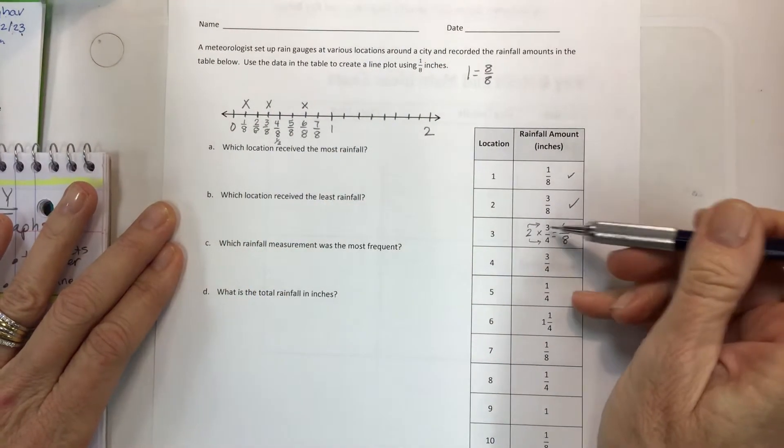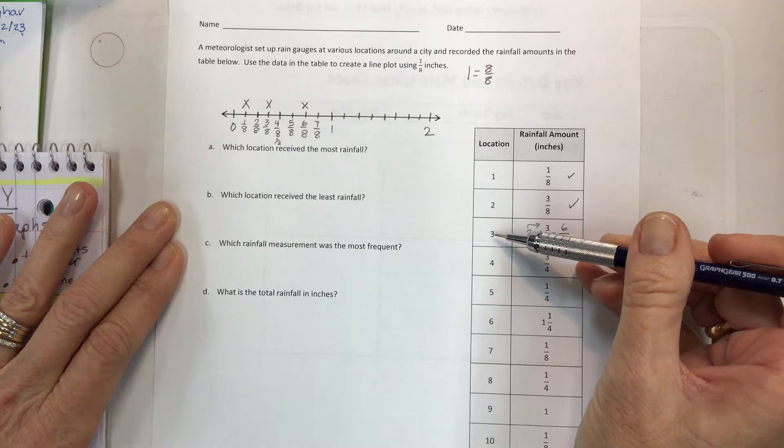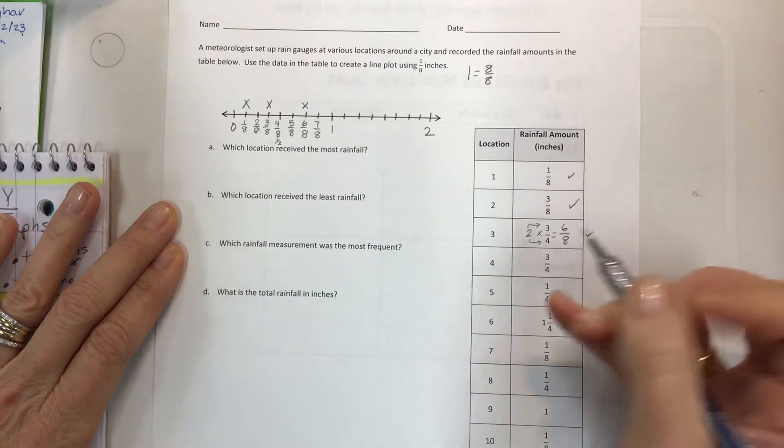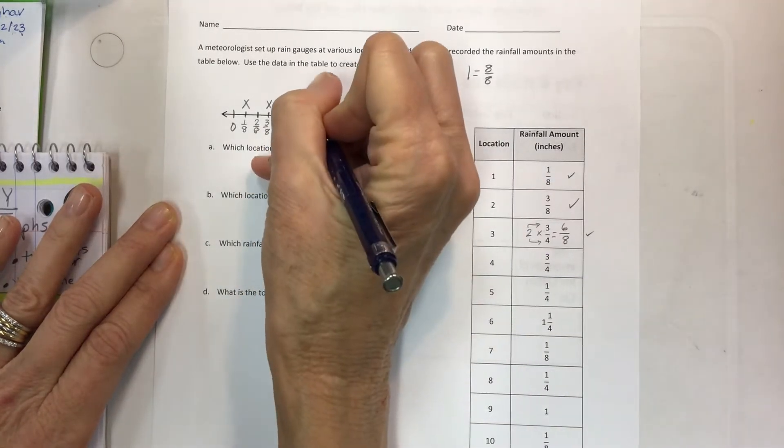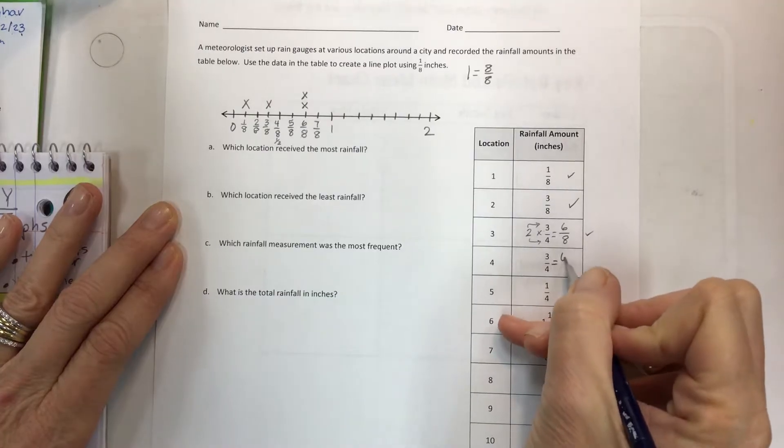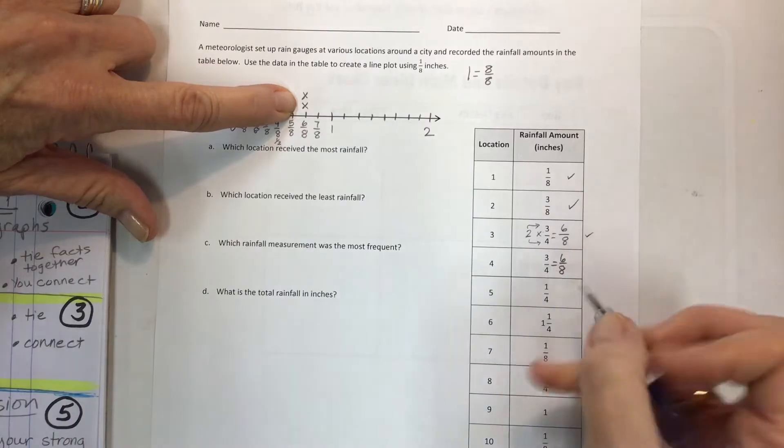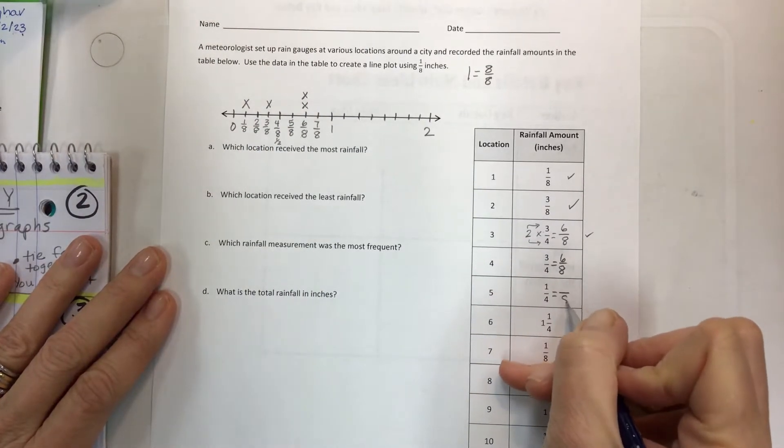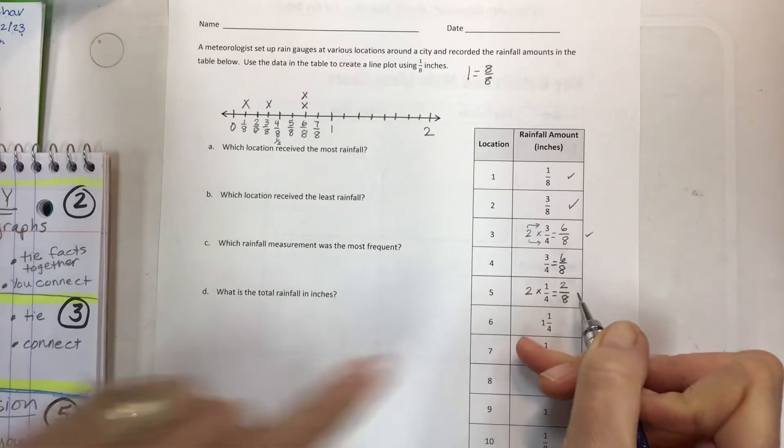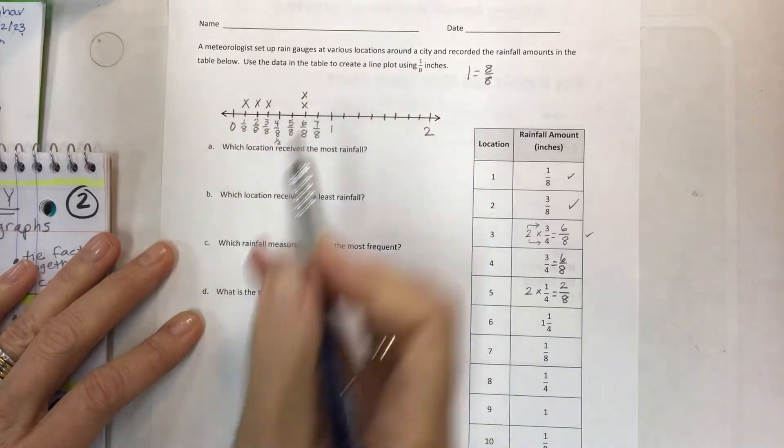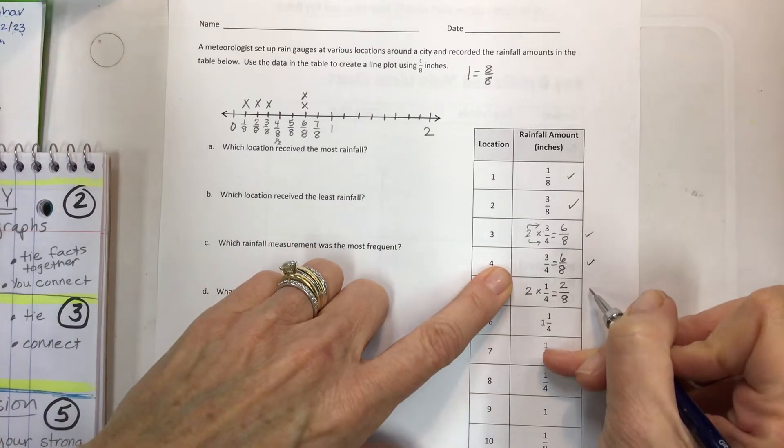This is the location of the x for the rain gauge at location 3. Now that one is plotted. We have another one at 3 fourths, so there are two at 6 eighths. Put your equivalent so you know what you're looking at and you should have two x's there now.